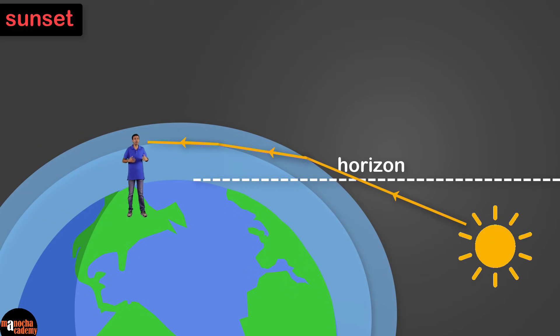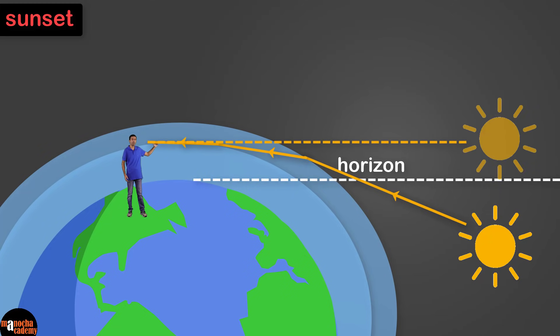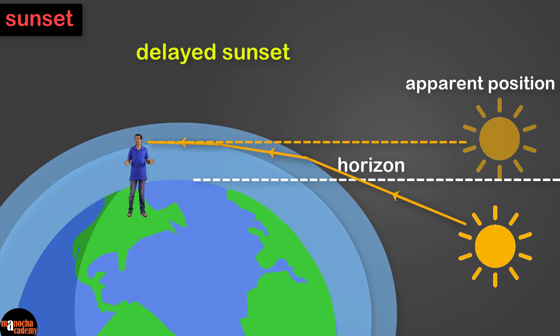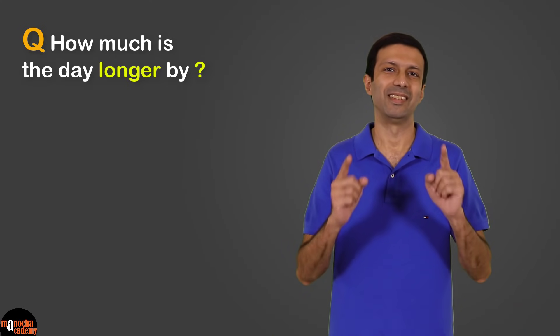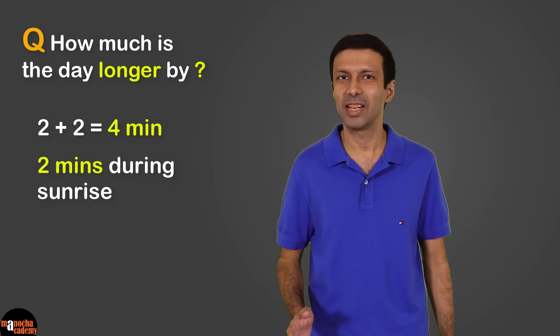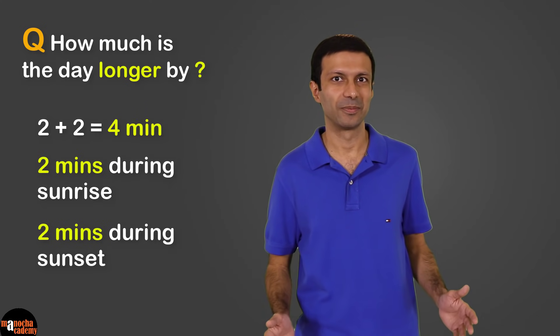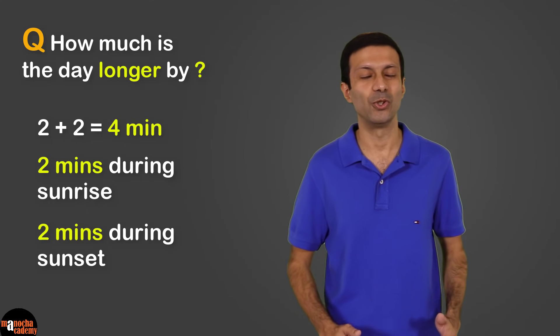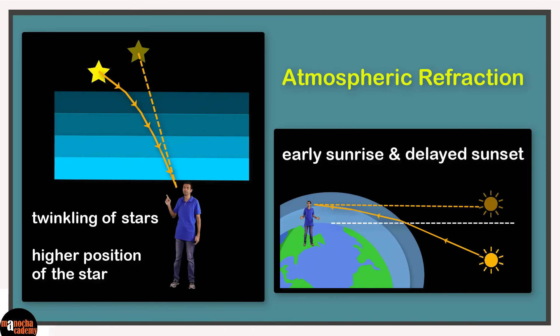The sunlight bends towards us and reaches our eyes, so we are able to see the Sun even though it is actually below the horizon. This is the apparent position of the Sun, so we can see the Sun even two minutes after sunset. Thanks to atmospheric refraction, how much longer is our day? That's right — two plus two equals four minutes. Two minutes during sunrise and two minutes during sunset, so our day is longer by four minutes due to atmospheric refraction.